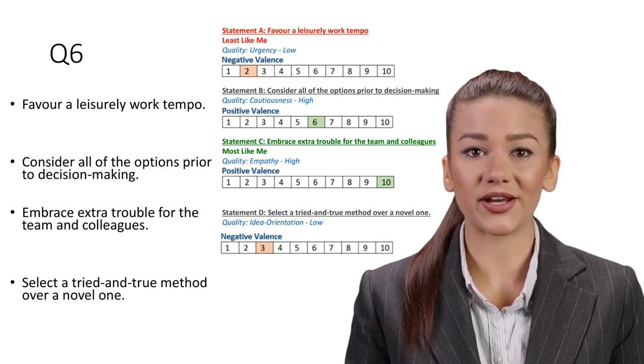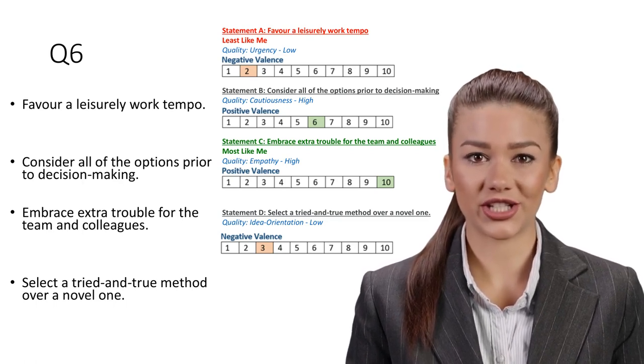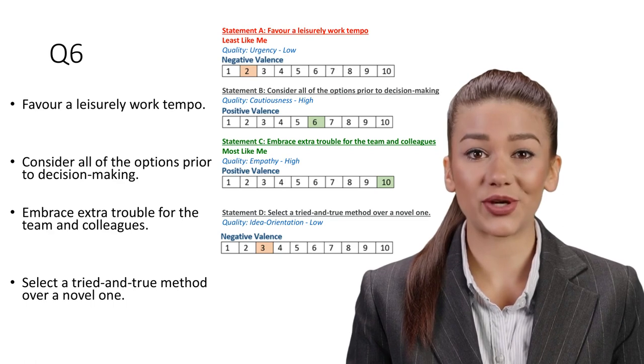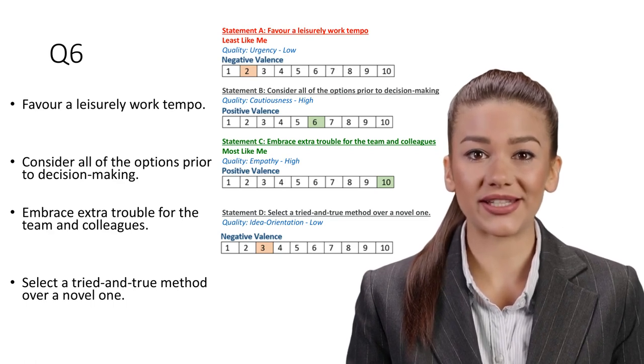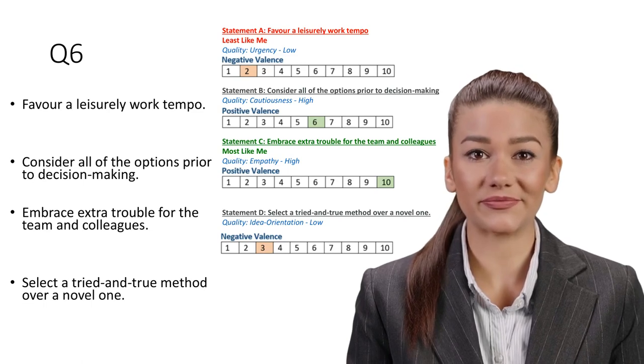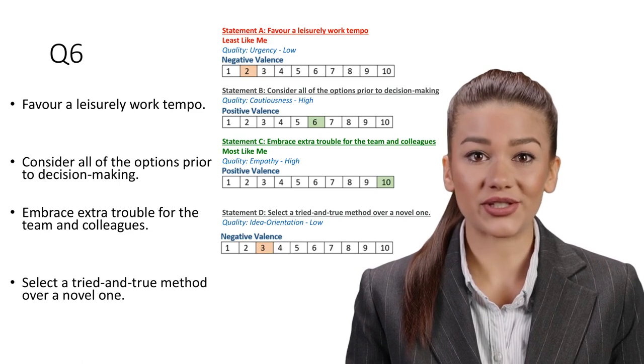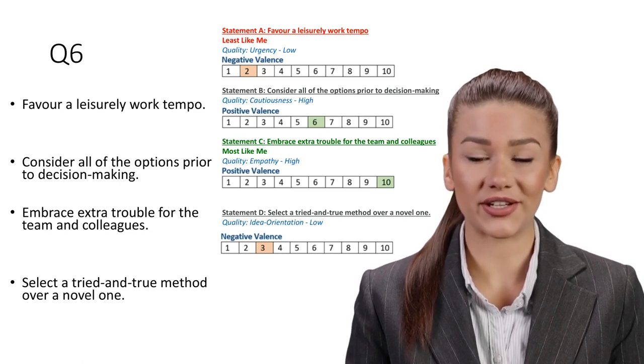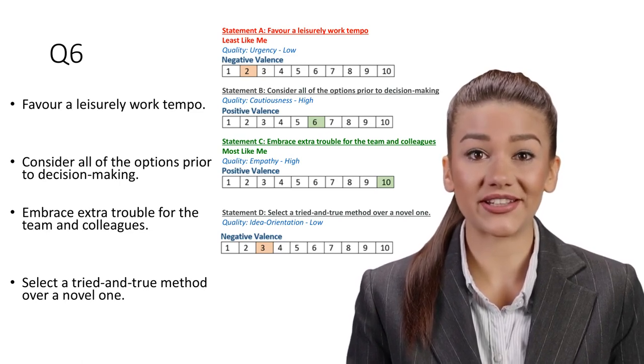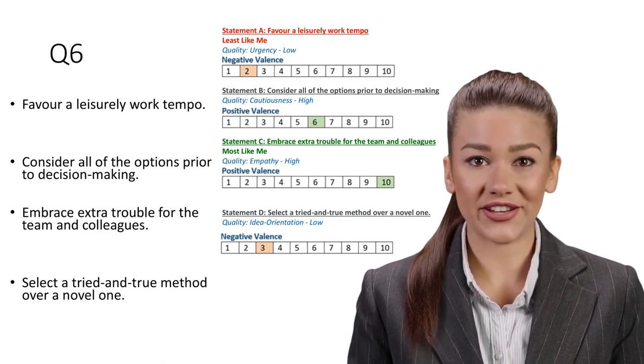Statement B: Consider all of the options prior to decision making. Quality: Cautiousness, High. Corporate staff are expected to make quick choices and operate fast to accommodate the modern business world. A key component of effective leadership is decisiveness. However, moving on too rapidly could result in avoidable errors. Being cautious, this statement is also a highly valued trait which will be allocated points in other questions.